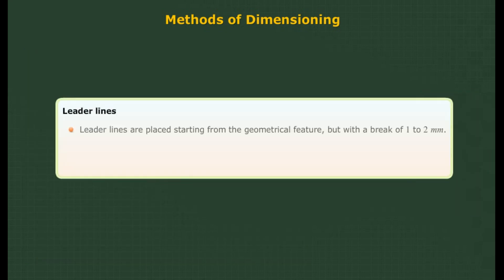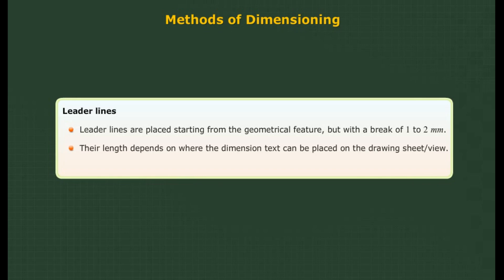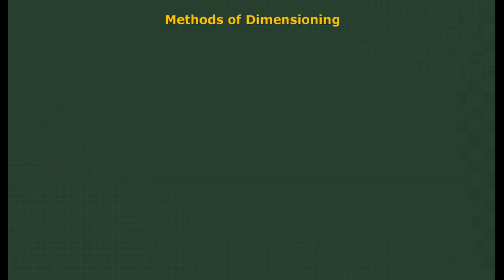Leader lines are placed starting from the geometrical feature, but with a break of 1 to 2 mm. Their length depends on where the dimension text can be placed on the drawing sheet or view. They extend 1 to 2 mm beyond the dimension line.